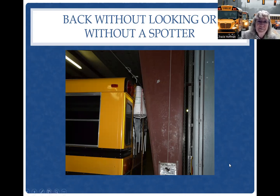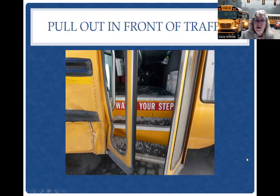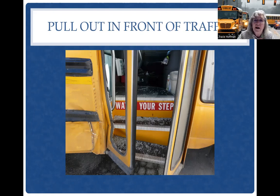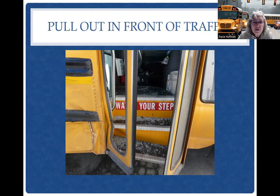Pulling out in front of traffic is hazardous. We've timed it: when a big bus comes from a side street and pulls onto a main street, it takes four full seconds to complete the turn and get straight. So four seconds, if you're looking at your following distance — which you should be doing all the time — is that distance. Oftentimes it's three-quarters to a full block away before you should turn out in front of another vehicle.